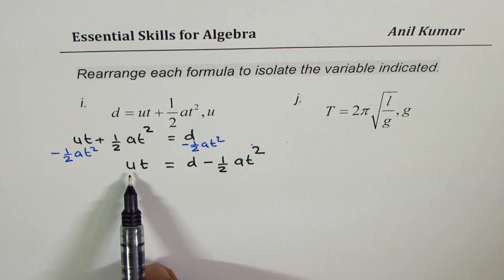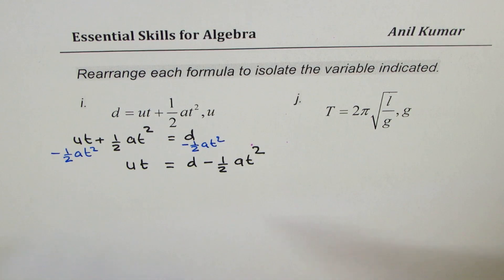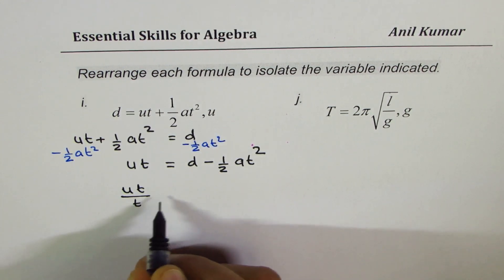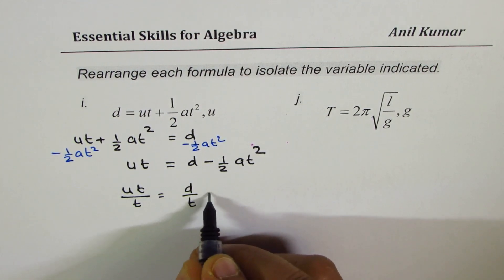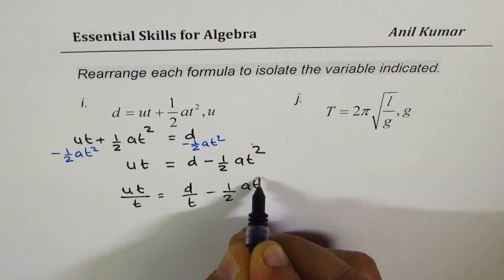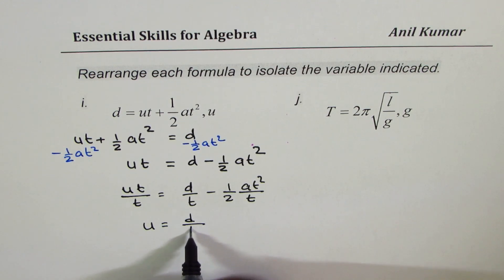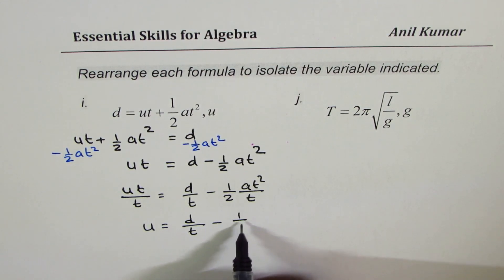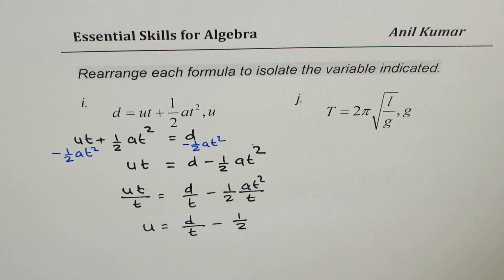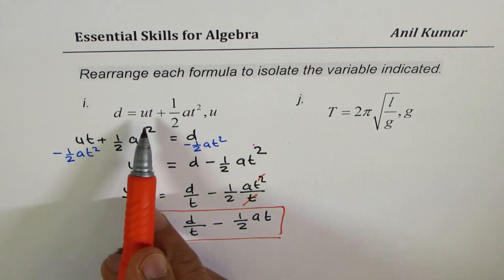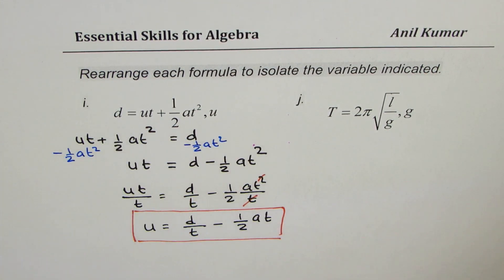Now to get u, divide everything by t. So u = d/t − (½at²)/t. One t cancels from at², leaving us with u = d/t − ½at. That becomes the formula for initial velocity after rearranging the displacement formula.